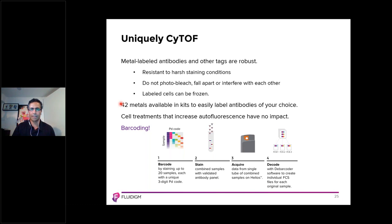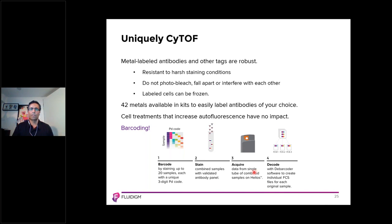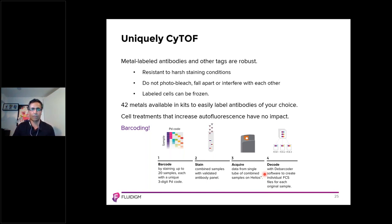Labeled cells can also be frozen and stored at minus 80°C with little to no impact on staining quality. Fluidigm also offers 42 metals available in kits to easily label antibodies of your choice. Finally, there is the barcoding option. Mass cytometry is the only high-parameter cytometry platform which enables barcoding. Fluidigm's barcoding kit allows staining of up to 20 samples, each with a unique three-digit palladium code. The barcoded samples are then combined in a single tube, processed, and acquired as a single sample. The single barcoded FCS file is then debarcoded with the CyTOF software to create individual FCS files for each original sample. Barcoding eliminates tube-to-tube variability, reduces reagent use, saves time during sample preparation and acquisition, and enables better cell discrimination.